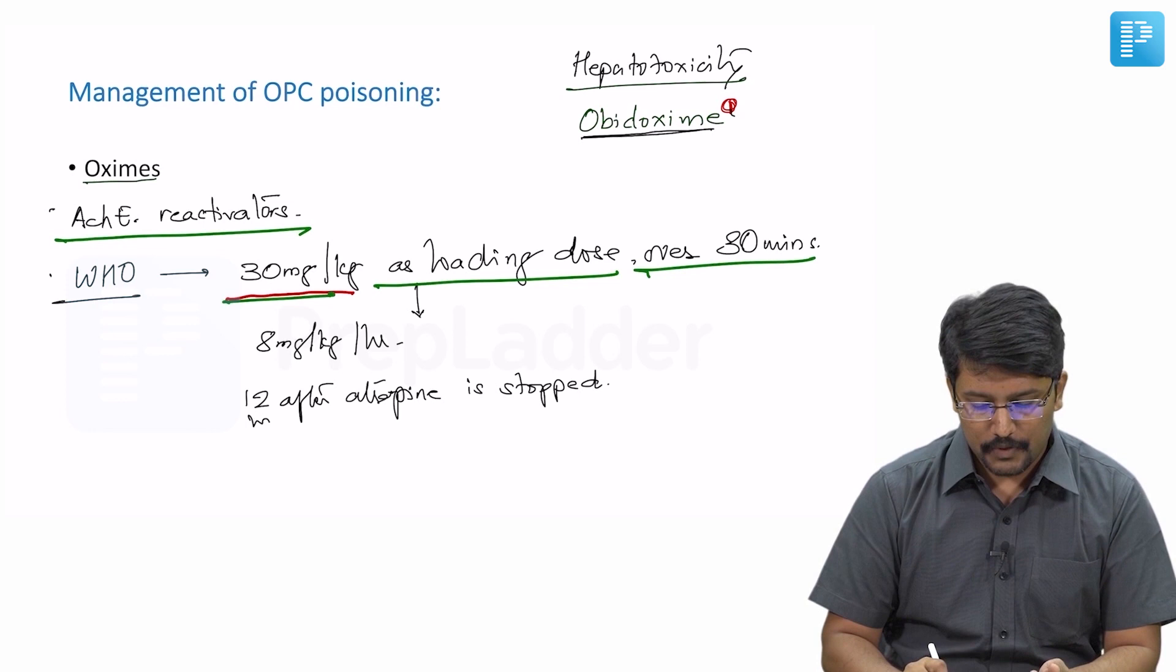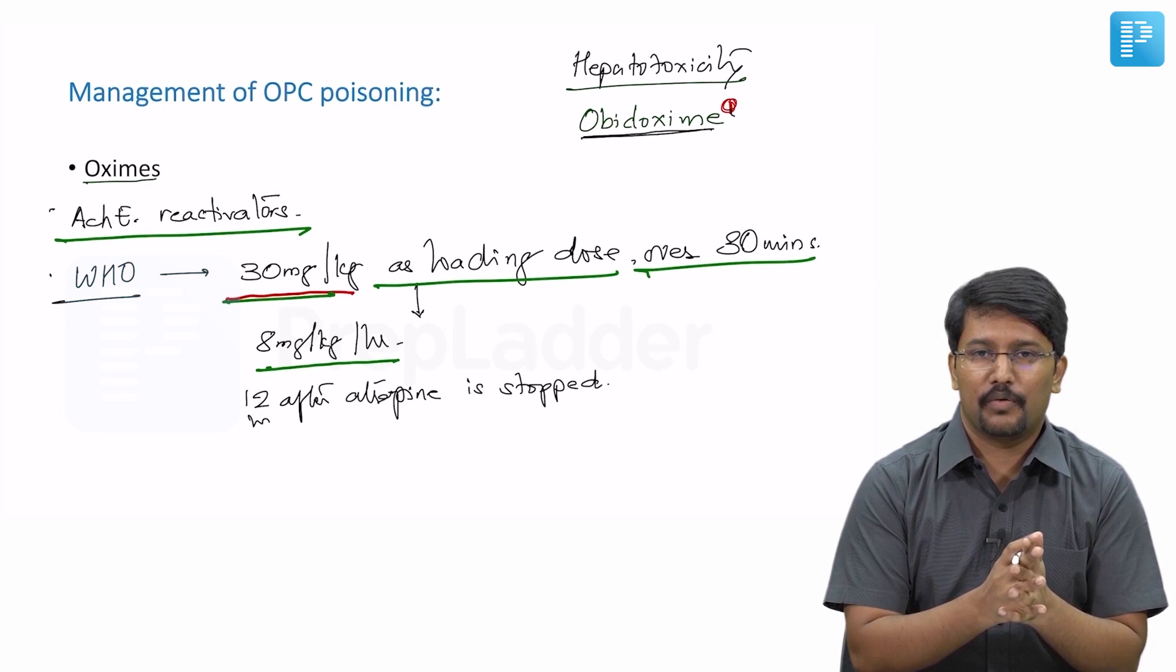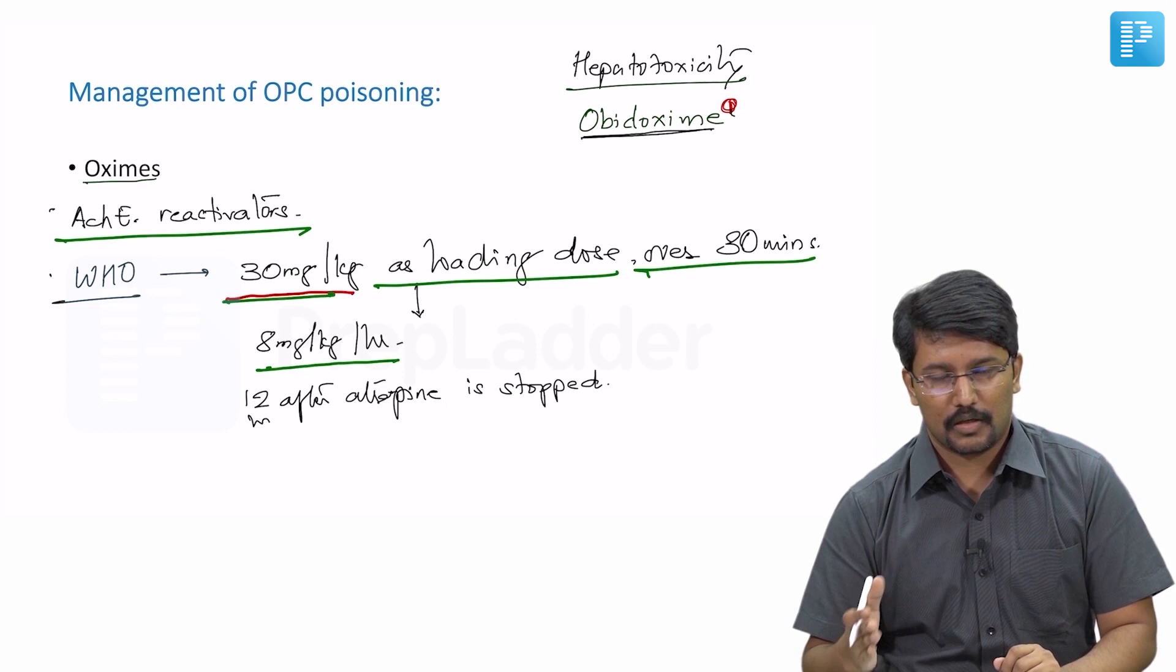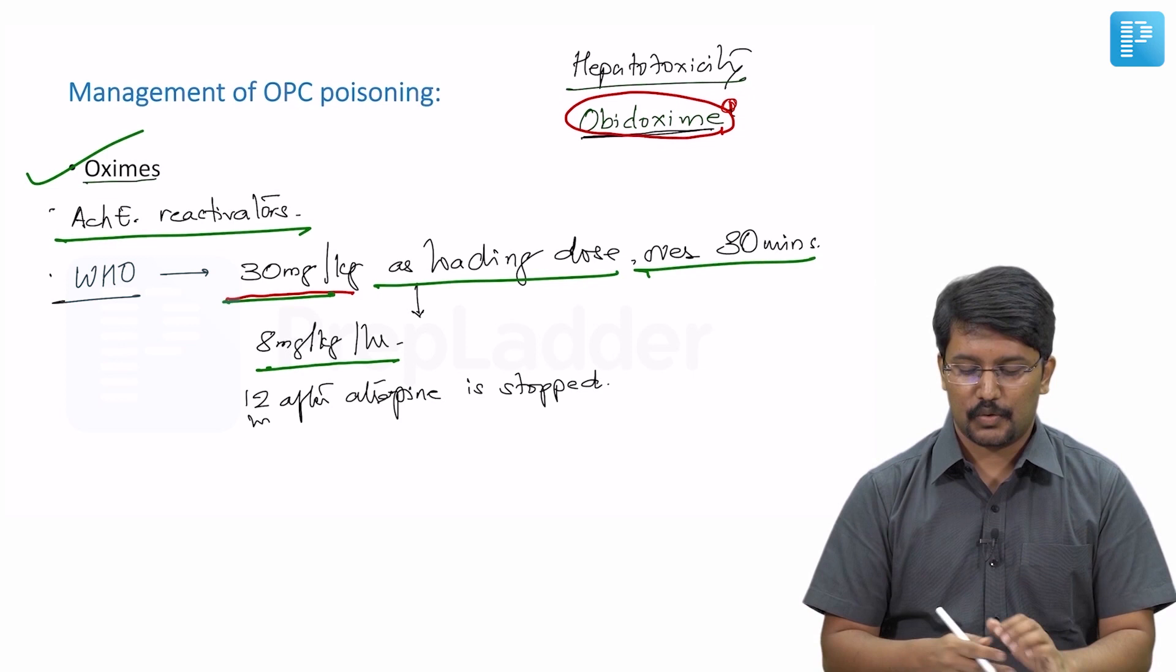And we will be continuing this infusion for at least 12 hours after patient no longer requires atropine. So if we have been able to stop atropine once all the toxicity criteria are met, after that at least for next 12 to 24 hours, we should be giving oximes as per WHO protocol. Keep this in mind, oximes can cause hepatotoxicity, particularly obidoxime, which is significantly associated with hepatic injury.